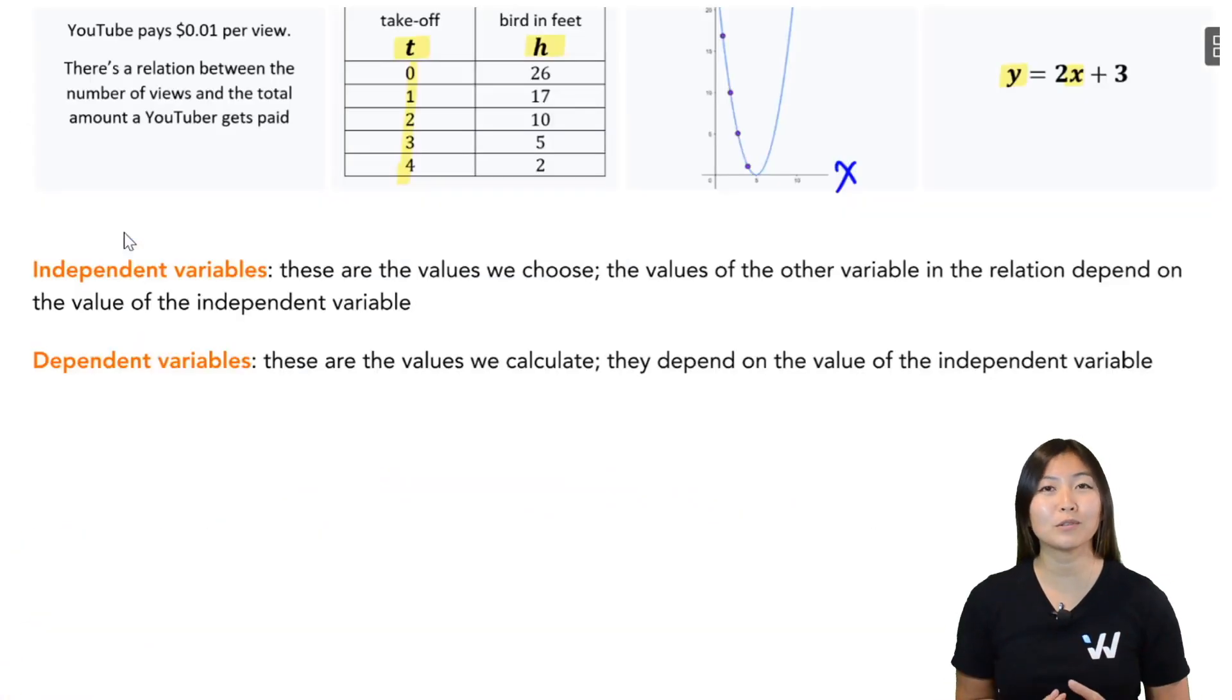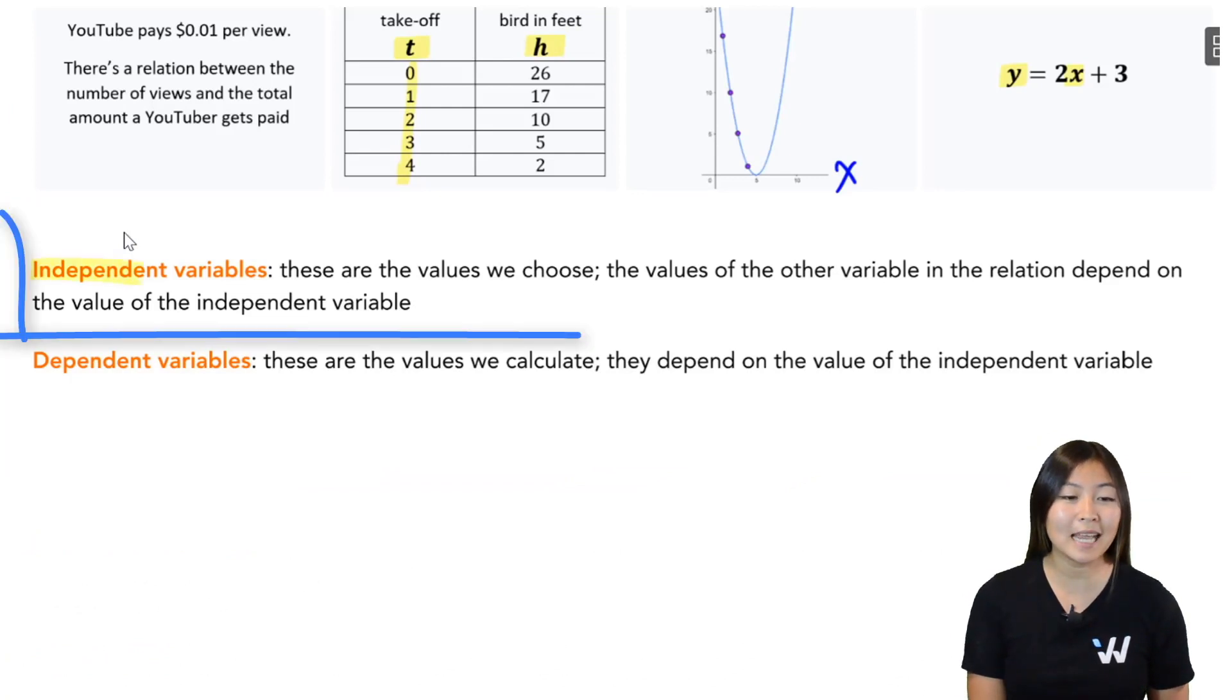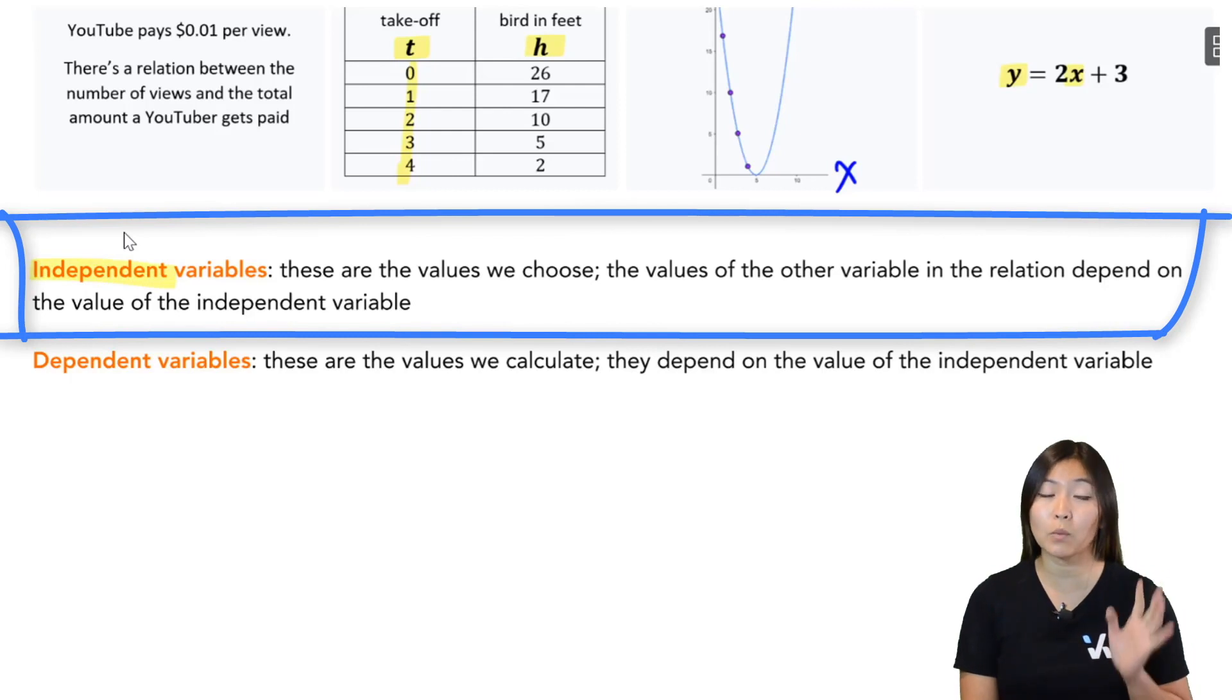Now, since there are two variables in a relation, we give them special names. First, we have something called an independent variable. Now, if you're used to your x, y graphs, independent variable is usually your x. These are the variables that we choose. We pick the values for x or pick the value for independent variables.